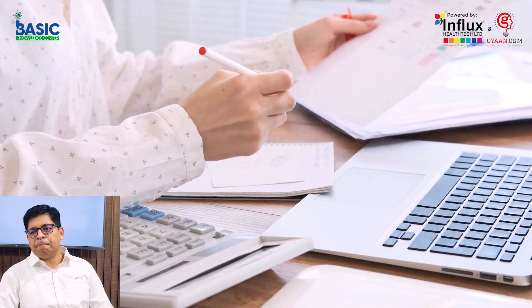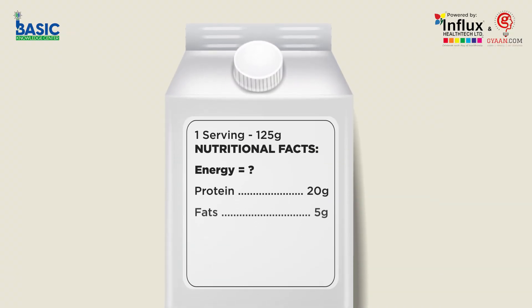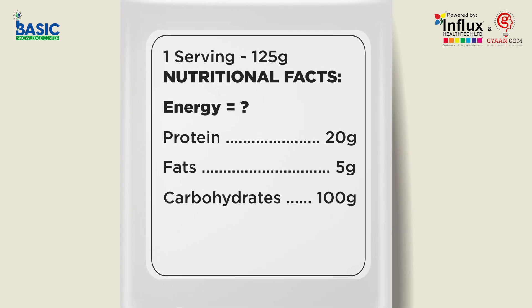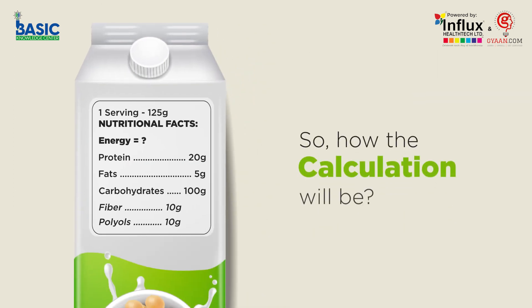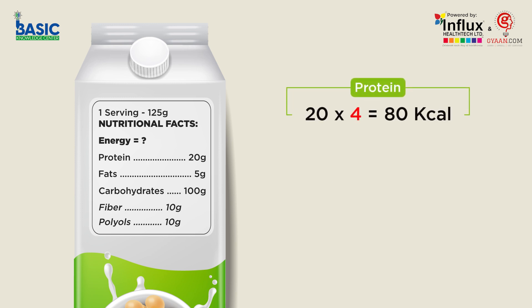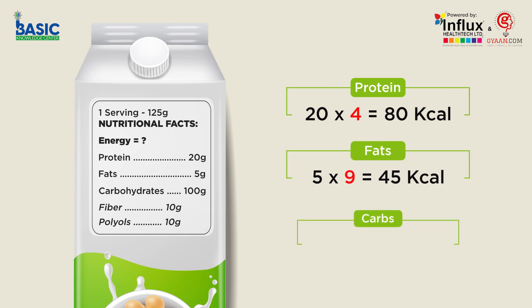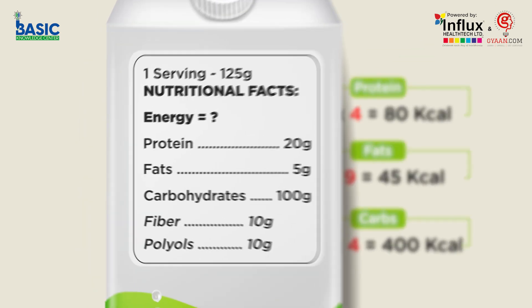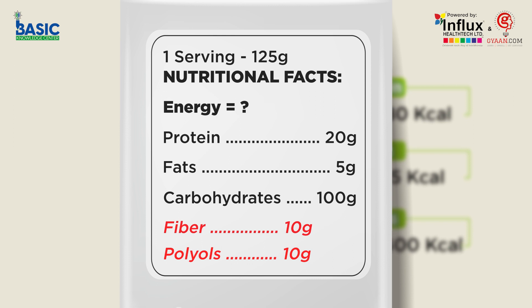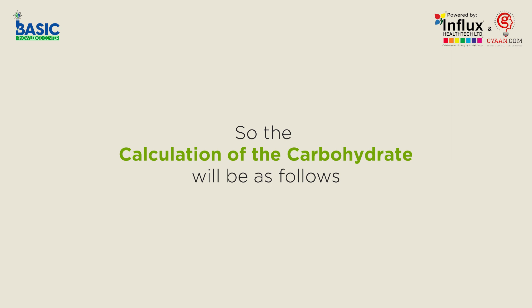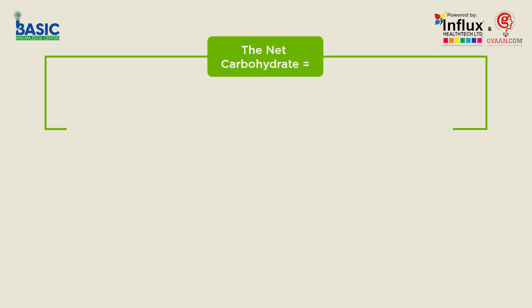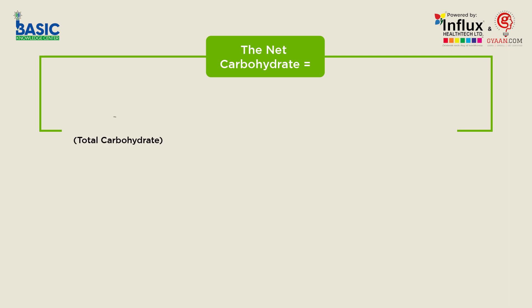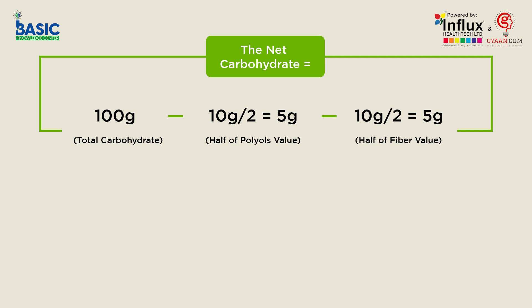Let's take an example. One serving of 125 grams has protein 20 grams, fat 5 grams, and carbohydrate 100 grams — but of those 100 grams, 10 grams are fibers and 10 grams are polyols. Protein: 20 × 4 = 80 kilocalories. Fat: 5 × 9 = 45 kilocalories. Carbohydrate should give 100 × 4 = 400 kilocalories, but we have 10 grams polyols and 10 grams fibers. The net carbohydrate equals total carbohydrate (100g) minus half of polyols (5g) minus half of fiber (5g), giving 90 grams net carbohydrate.